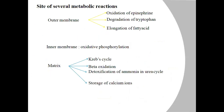Several metabolic reactions occur at specific mitochondrial locations. In the outer membrane: oxidation of epinephrine, degradation of tryptophan, and elongation of fatty acids. In the inner membrane: oxidative phosphorylation. In the matrix: the Krebs cycle, detoxification of ammonia in the urea cycle, and storage of calcium ions.